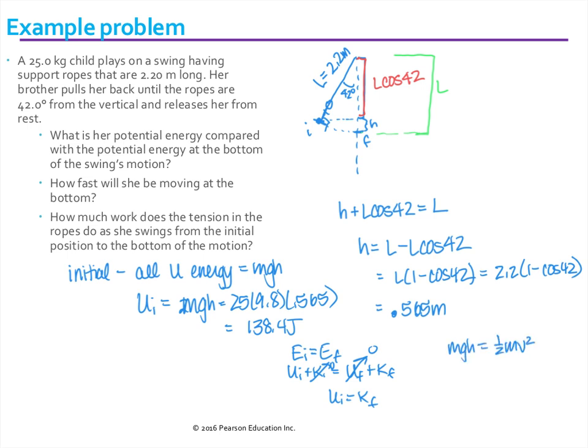So setting the potential energy initial to the final kinetic energy. I know I have a value for all this, but I'm just going to do some simplification to point out that a lot of times these things can simplify. And then if I put in my values, I would find a speed of 3.33 meters per second.